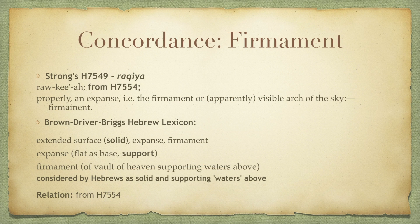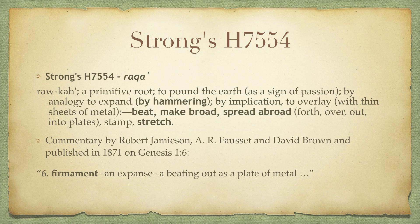God did not make a firmament to hold up mist and vapor but the great deep waters from verse 2. God had to make something solid, and this is what the meaning of the word firmament — 'rakia' — conveys. From Strong's it means 'an expanse, the firmament, apparently a visible arch of the sky.' From the lexicon, from the root word 'rakar,' notice the meaning: 'extended surface, solid, flat as a base or support, vault of heaven supporting waters above, considered by the Hebrews as solid.'